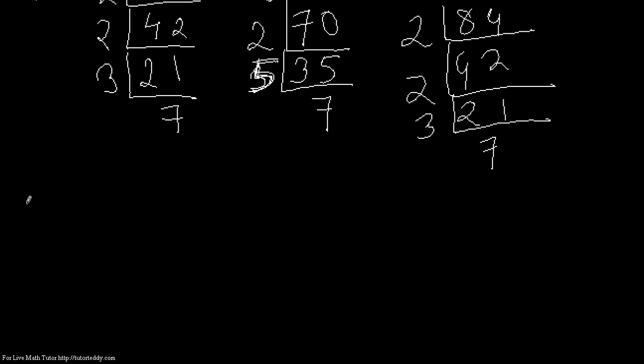Once we have found this way, we can write now. First number is eighty-four. Eighty-four equals to two into two into three into seven.